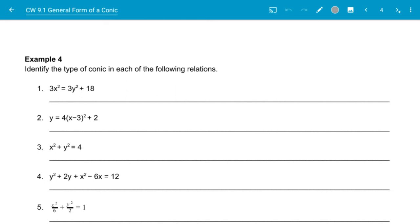Example four says identify the types of conics in each of the following sections. So the first one says 3x squared plus 3y, or 3x squared equals 3y squared plus 18.